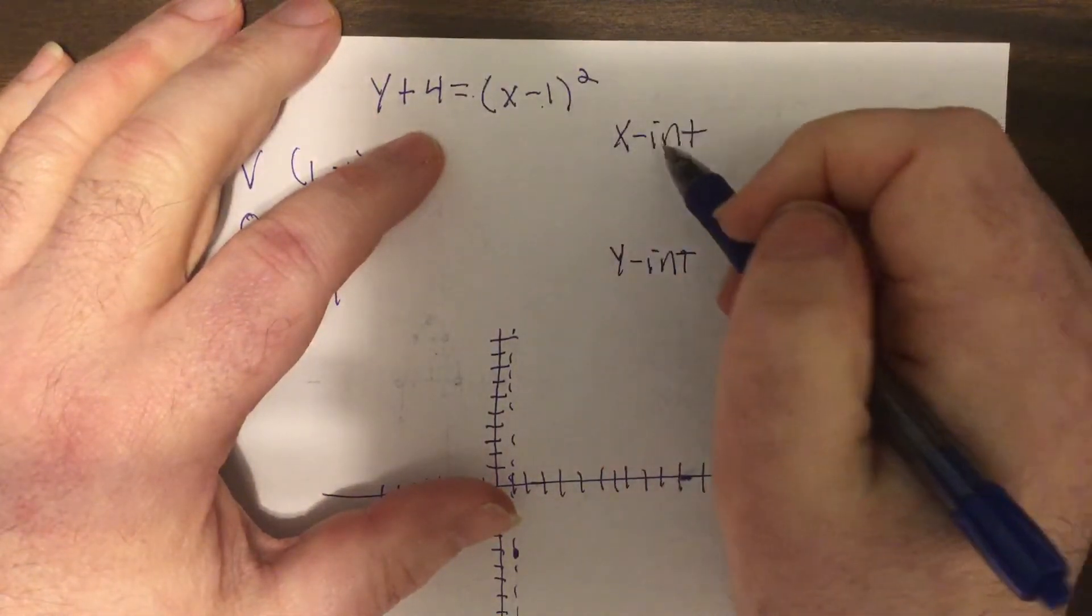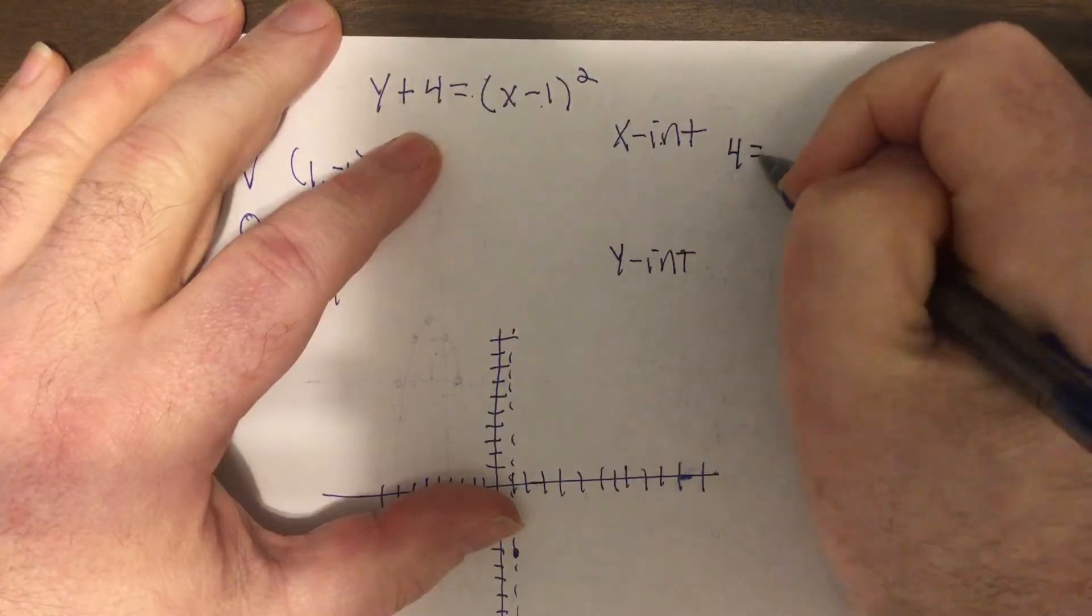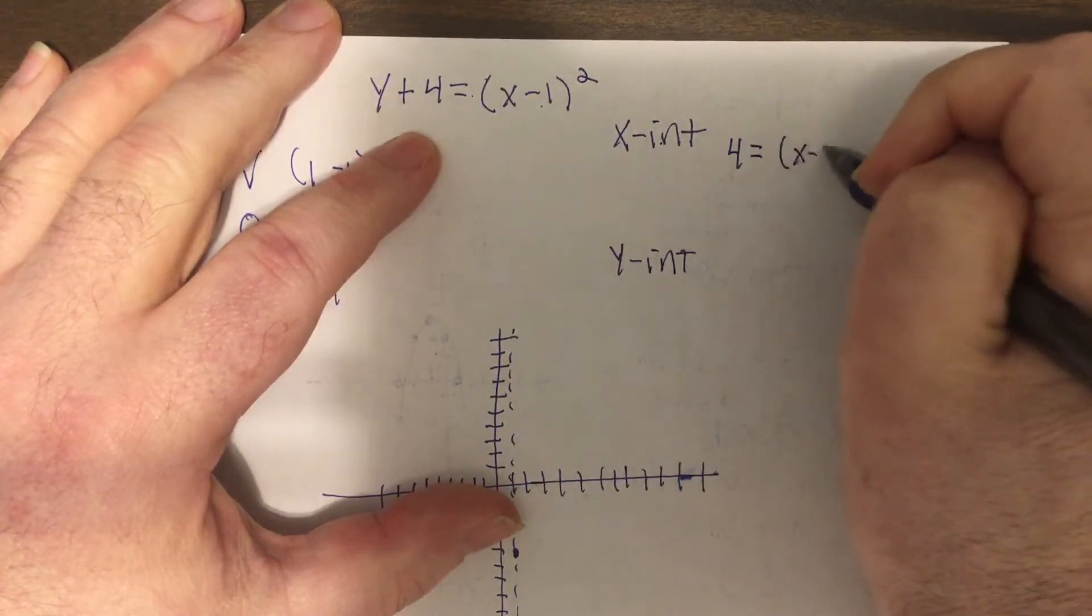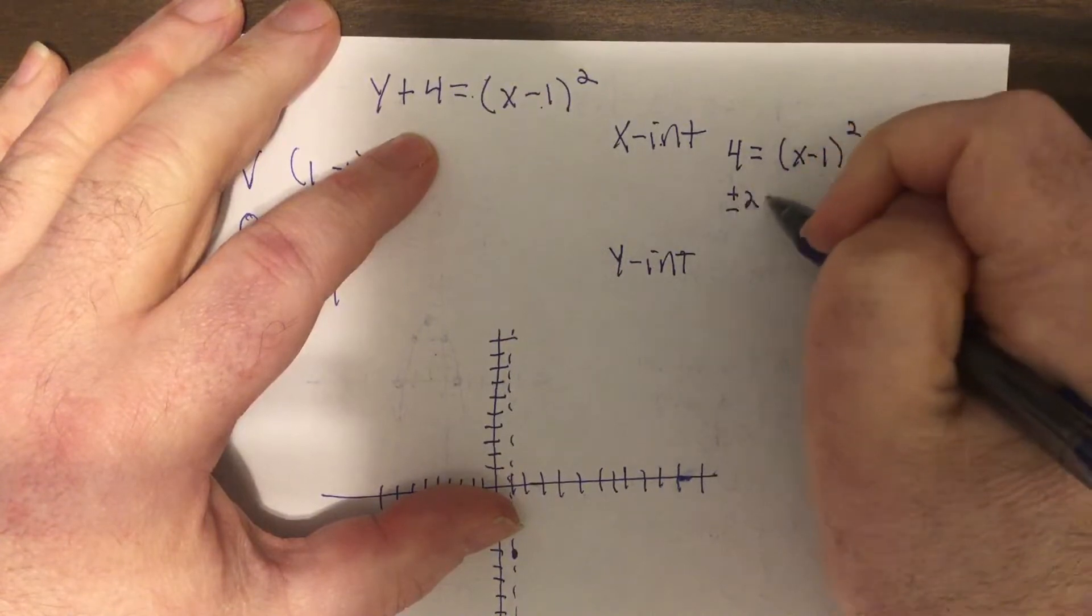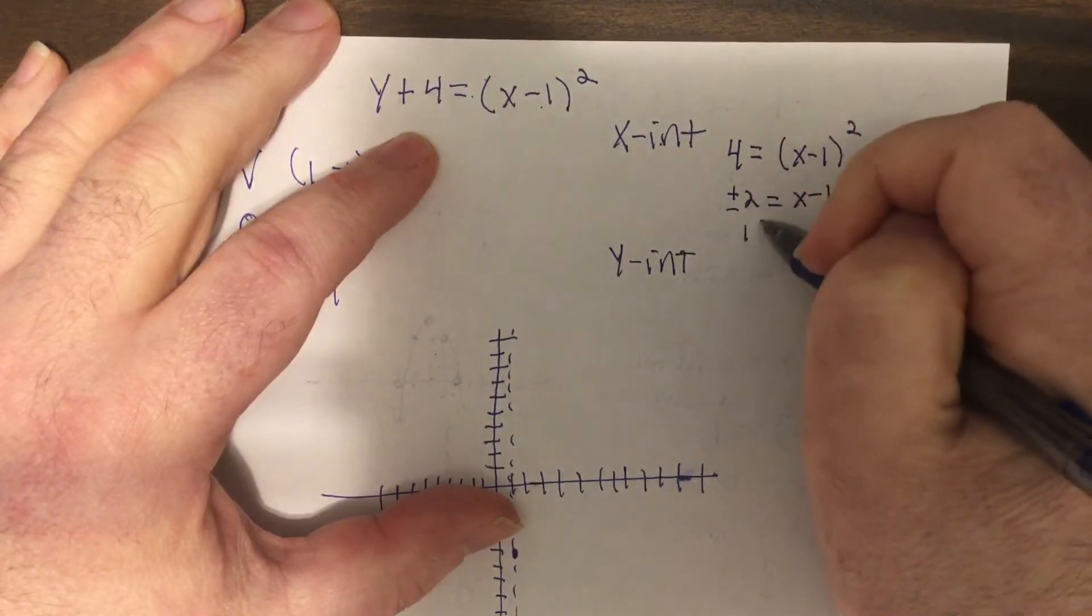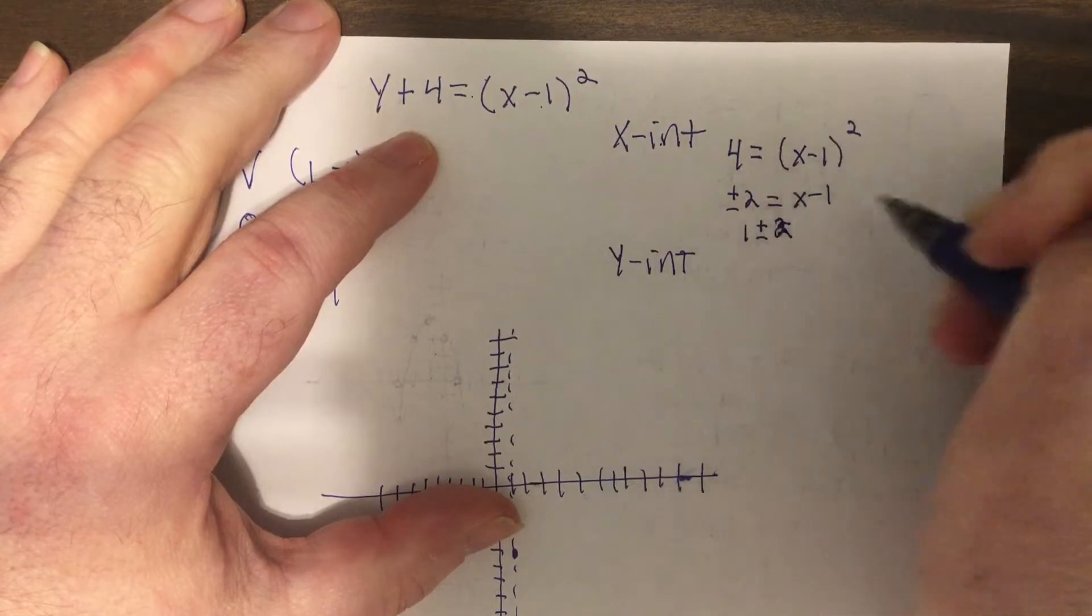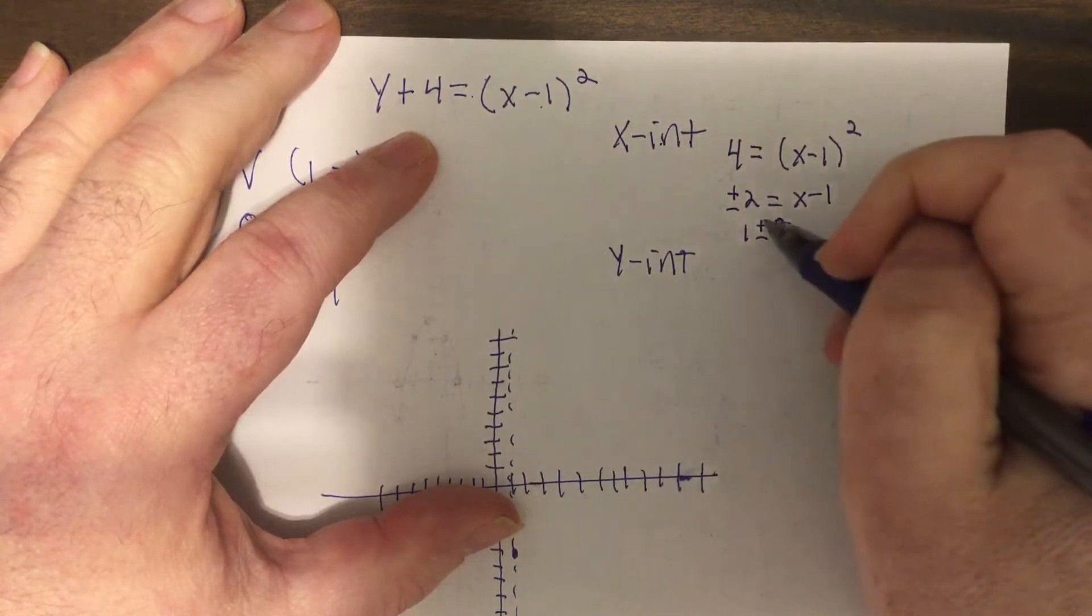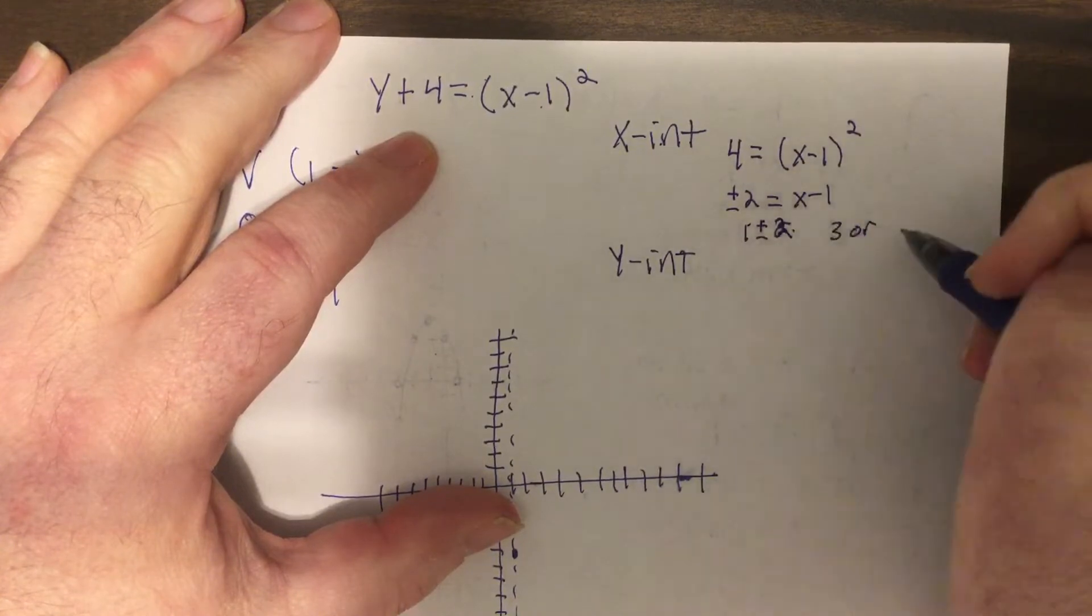So for the X intercept, I put zero in for Y. So it'd be four equals X minus one squared. So square root plus or minus two equals X minus one. So add one plus minus two.